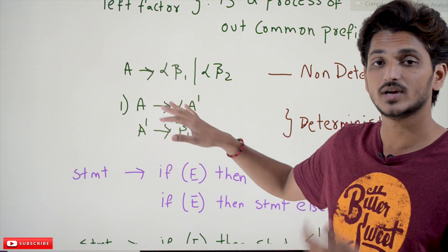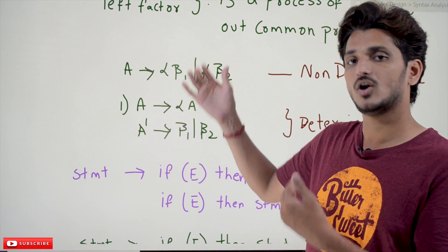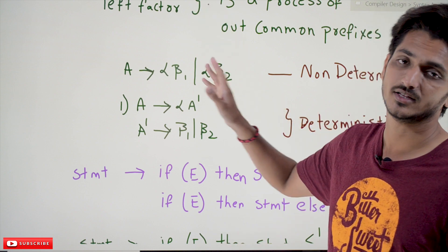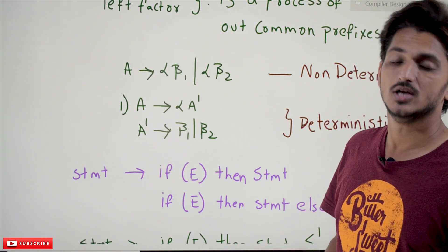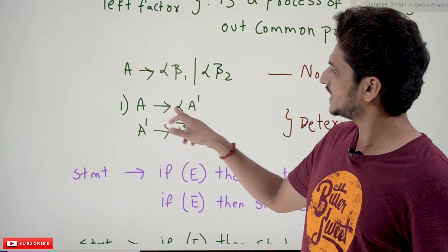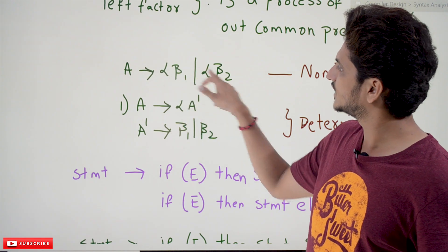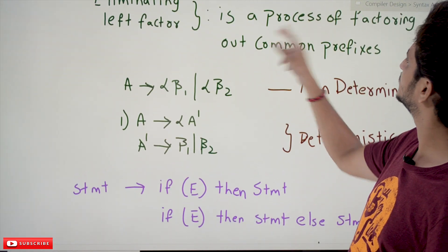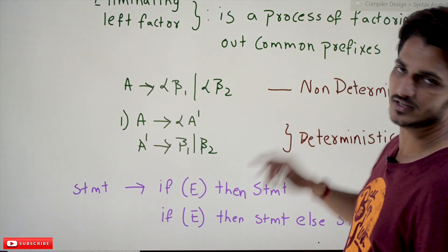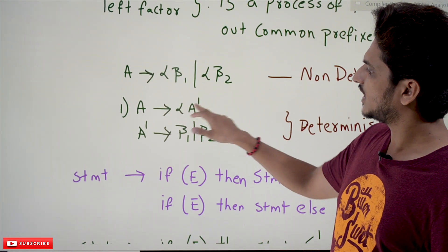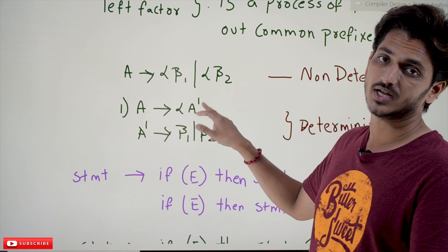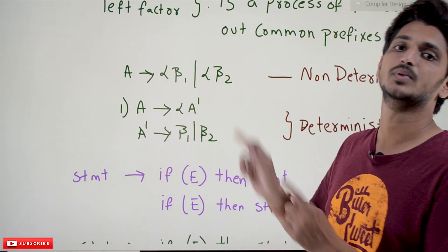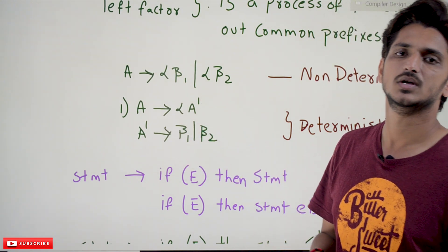We should eliminate this non-determinism — another way to say it is converting a non-deterministic grammar to a deterministic grammar using left factoring. To do that: take the common prefix alpha out, then add one more production A-dash, where A-dash tends to beta1 or beta2. This is how we eliminate non-determinism in our context-free grammar.